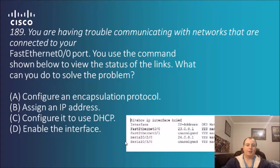Question 189: you are having trouble communicating with networks that are connected to your FastEthernet 0-0 port. You use the command shown below to view the status of the links. What can you do to solve the problem? Options are: configure encapsulation protocol, assign an IP address, configure it to DHCP, or enable the interface.